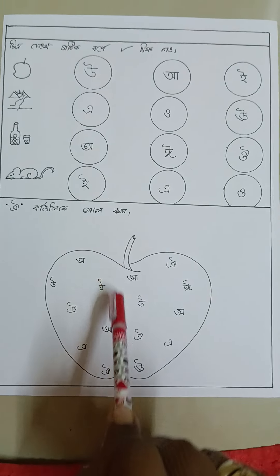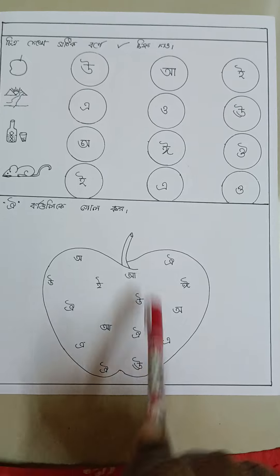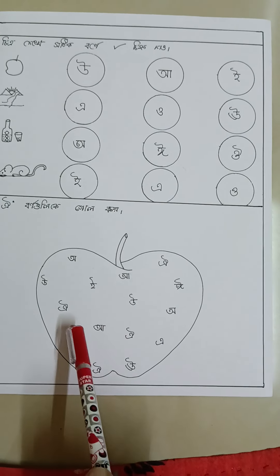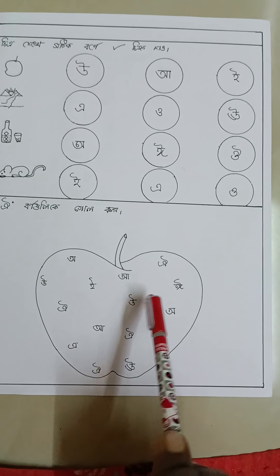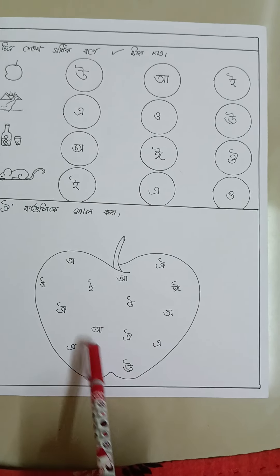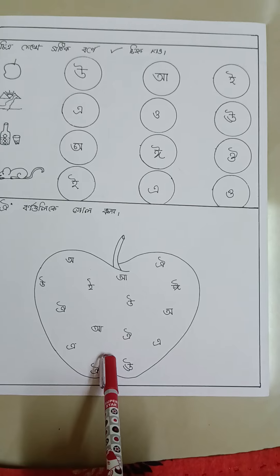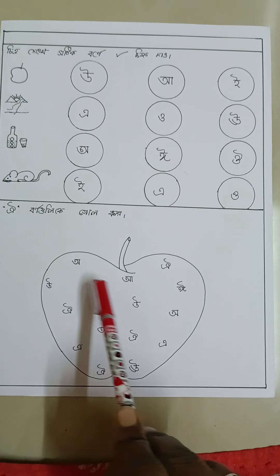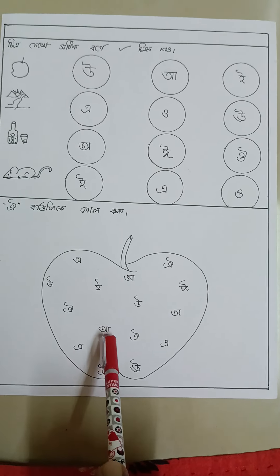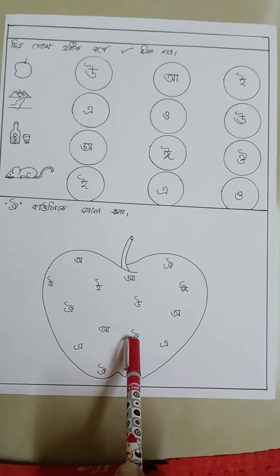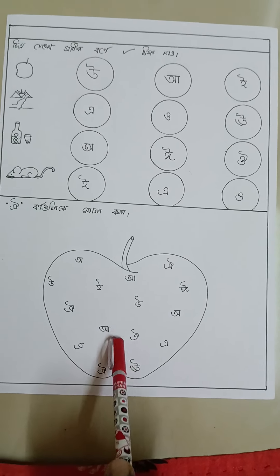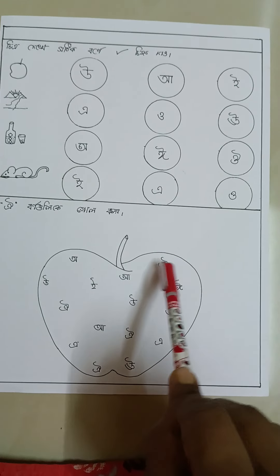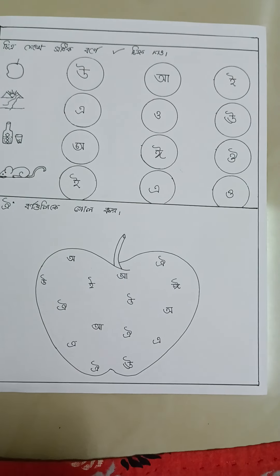Here I have drawn one apple, and I have given a lot of Bengali alphabets inside it. The child will identify the letter which is 'oi' and will make a circle surrounding it.